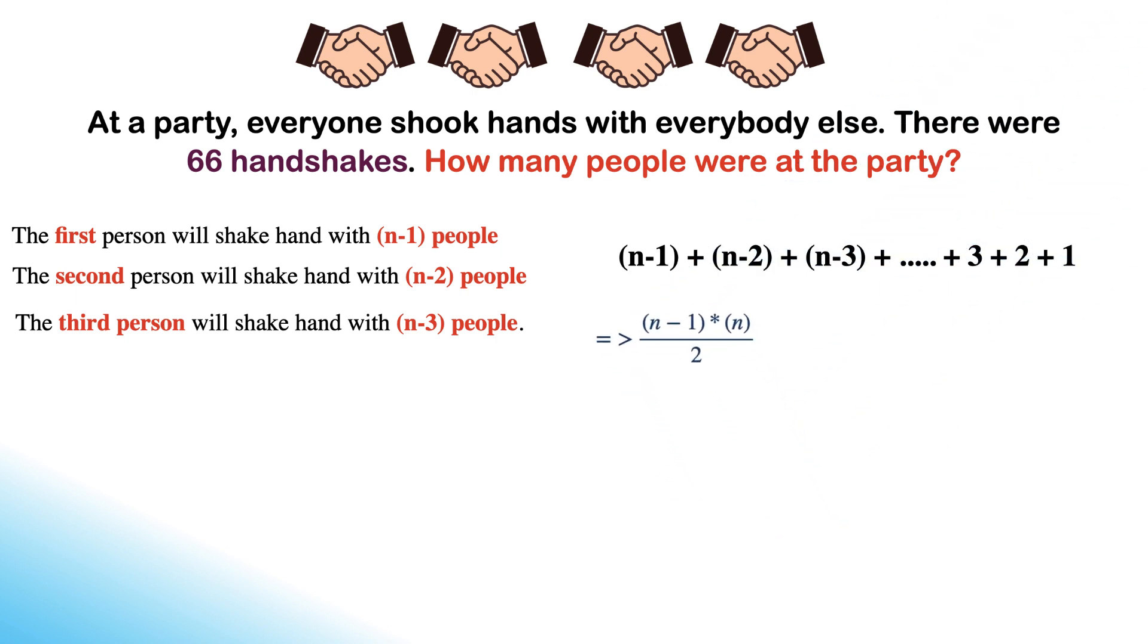Also, we know that in the puzzle, the total handshakes given are 66. Hence the equation becomes n times n minus 1 over 2, which is equal to 66.